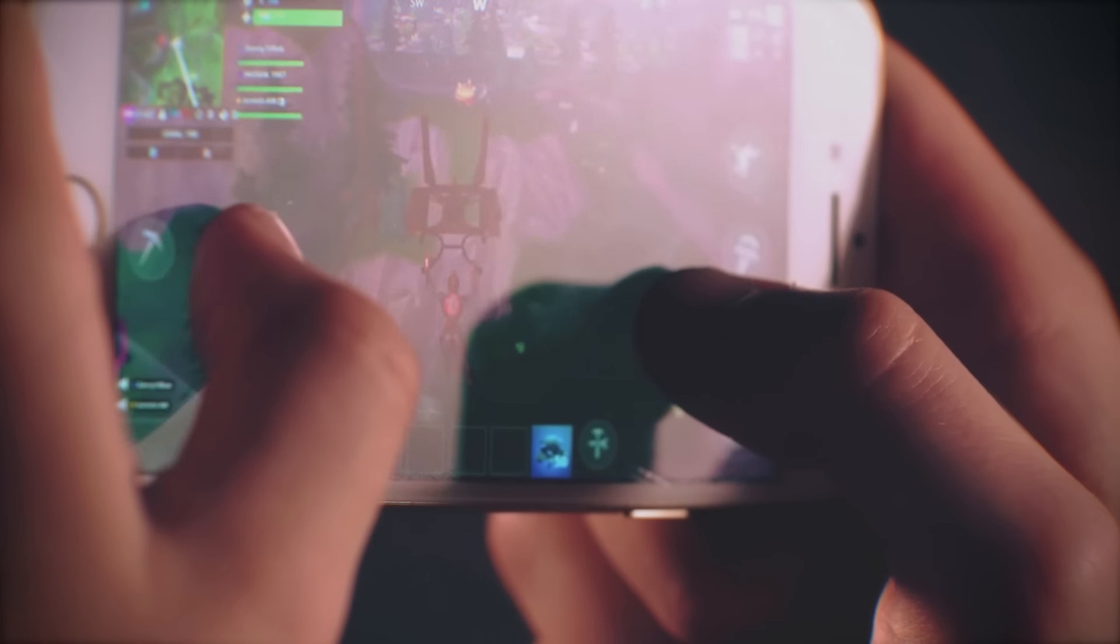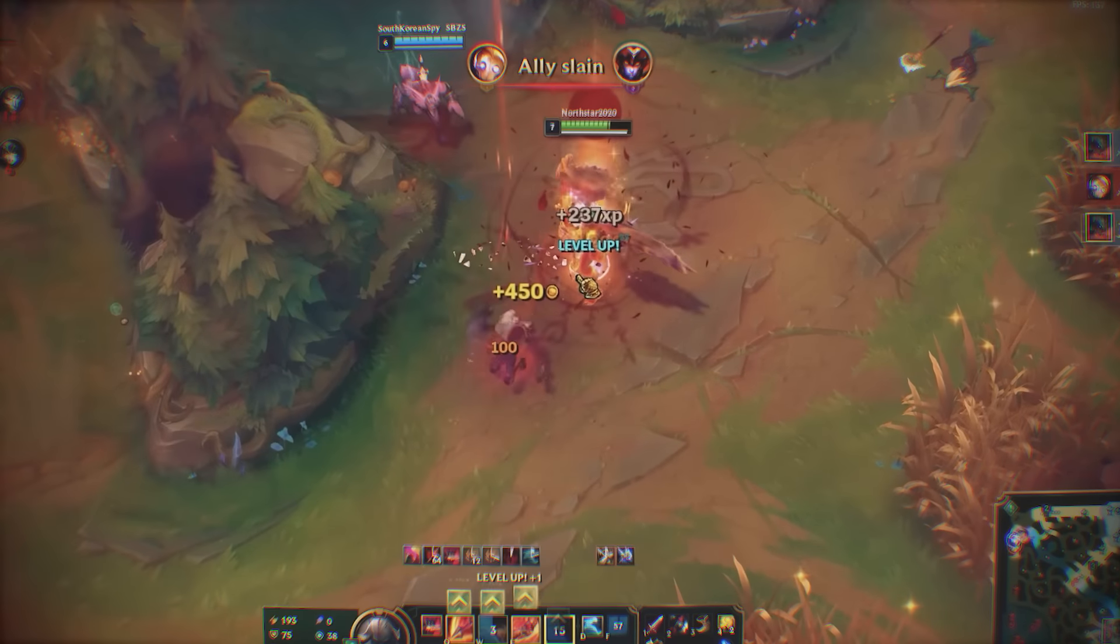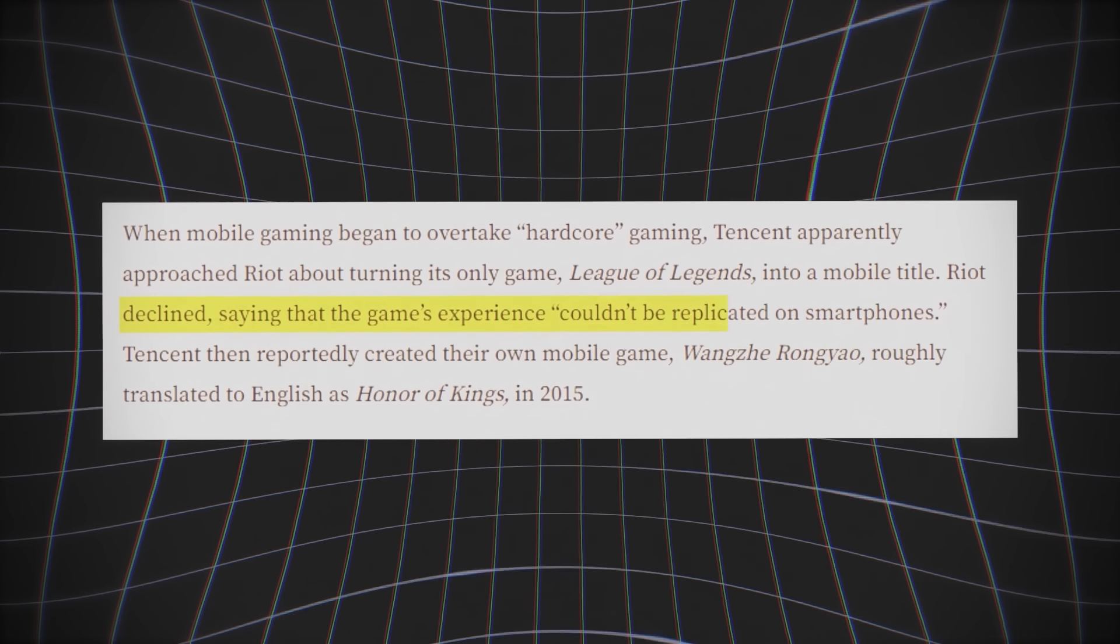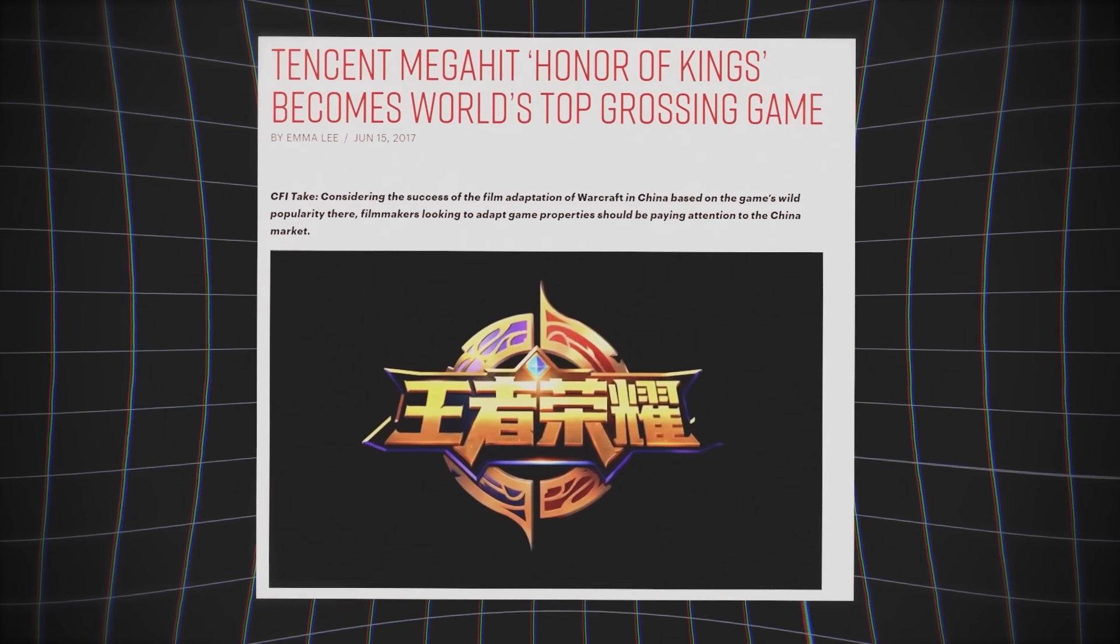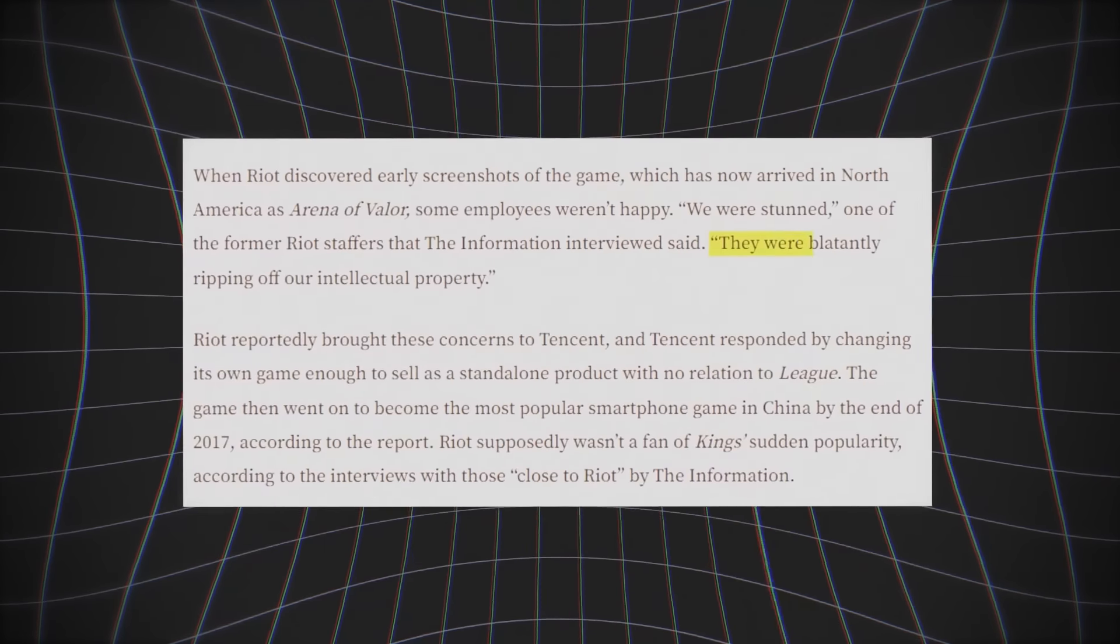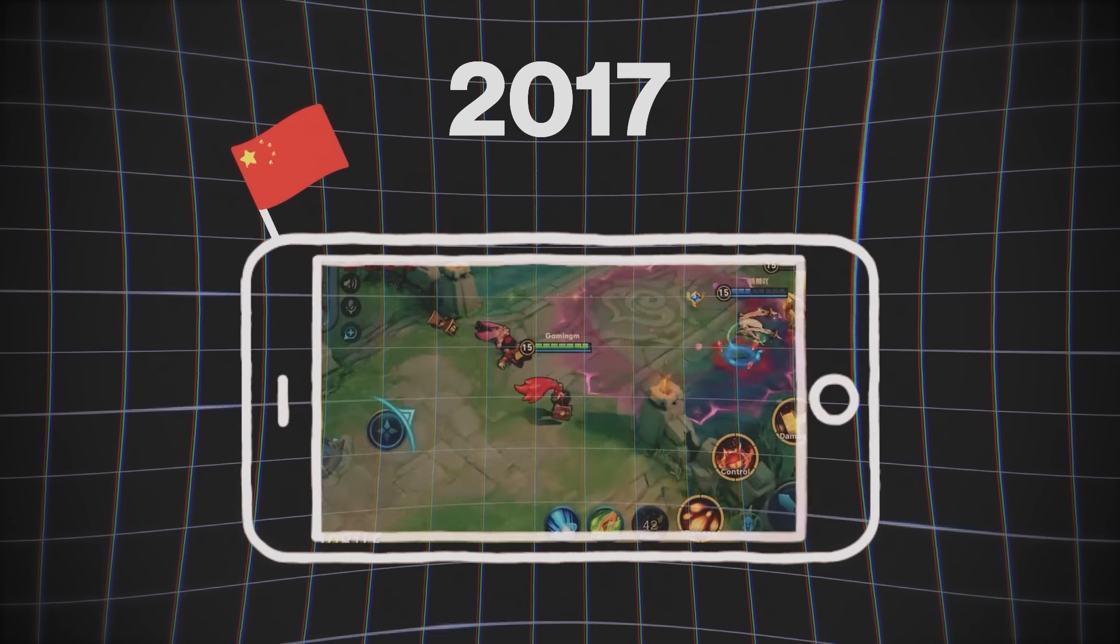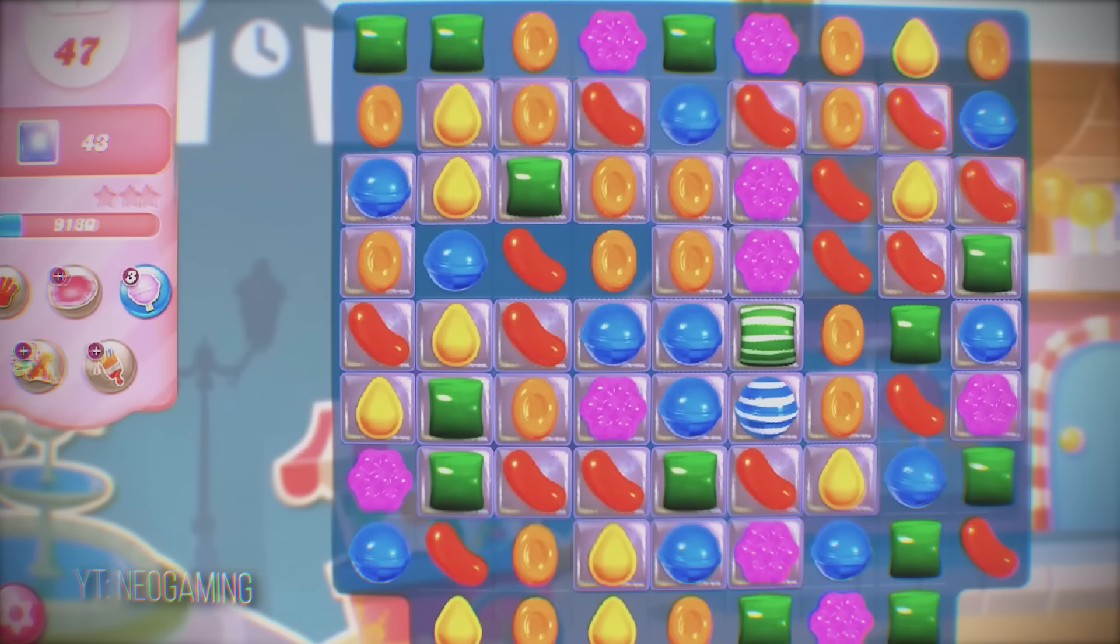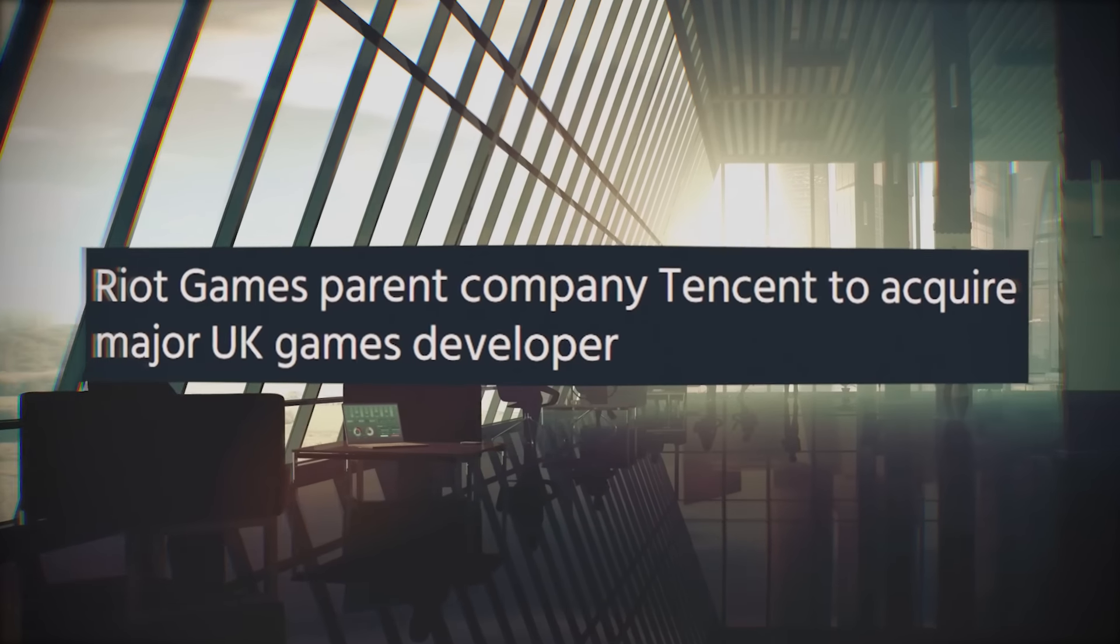Another questionable action happened when mobile gaming started gaining traction. Tencent talked with Riot Games about turning League of Legends into a mobile game. Riot declined, explaining that the game's experience couldn't be replicated on smartphones. So what did Tencent do? They created their own game called Honor of Kings, which was a literal ripoff of League. They stole Riot's intellectual property, and when Riot brought it up, they changed the game just enough so they wouldn't get in trouble. And by the end of 2017, Honor of Kings became the most popular smartphone game in China.